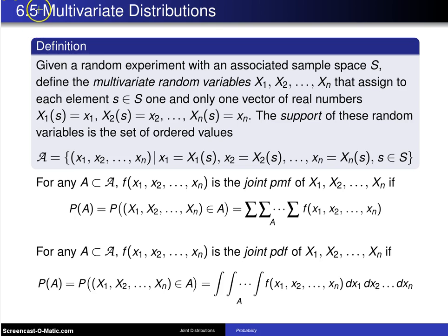Now in this last section in Chapter 6 it is going to get kicked up to multivariate distributions where we have n random variables that are of interest at a time.